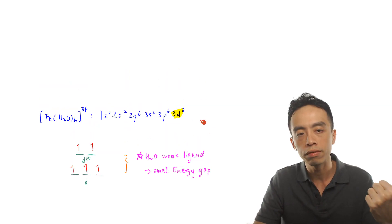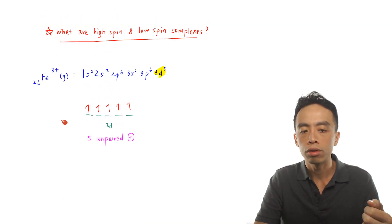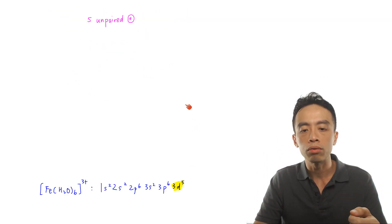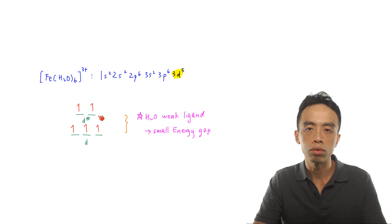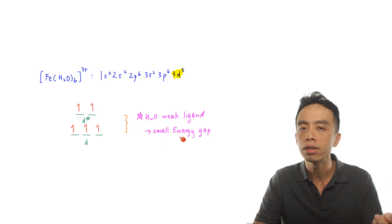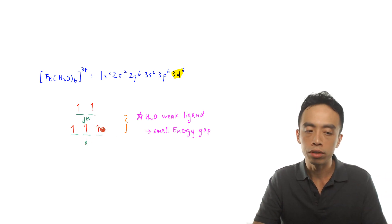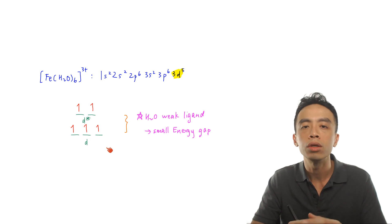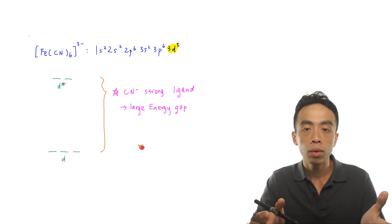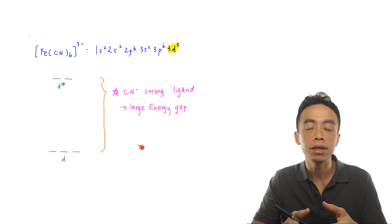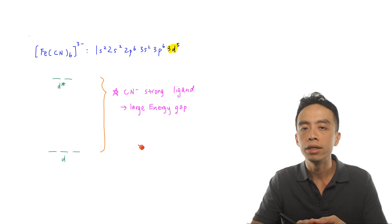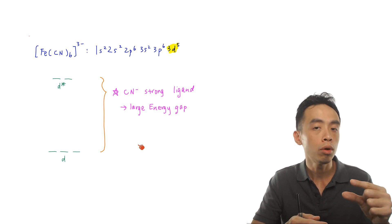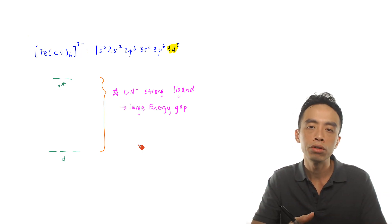This is effectively the same as iron 3+ in the gaseous state — five unpaired electrons. With water as a weak ligand and a small energy gap between d and d*, the electrons simply fill up as normal, ignoring the small energy gap, and we end up with the same electron configuration as the free ion.